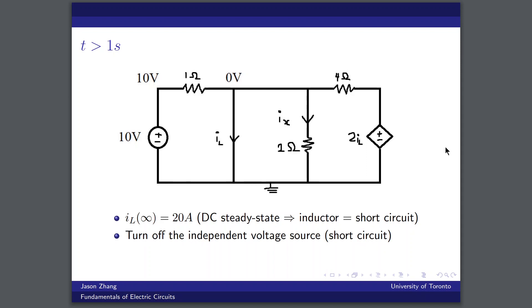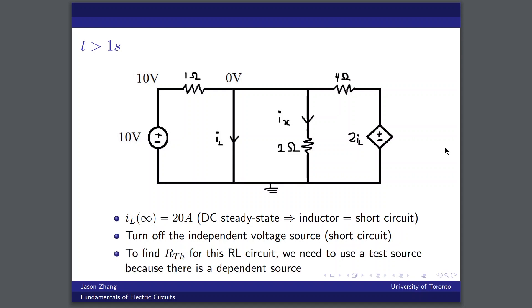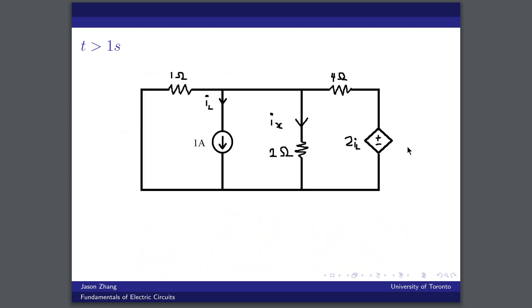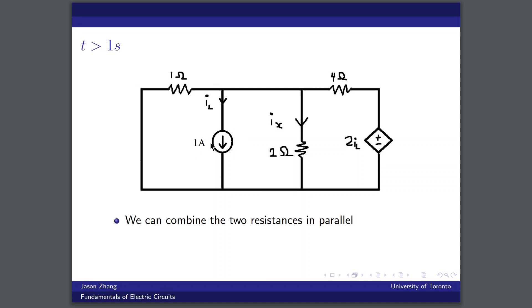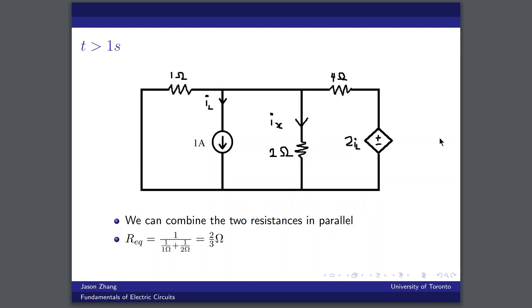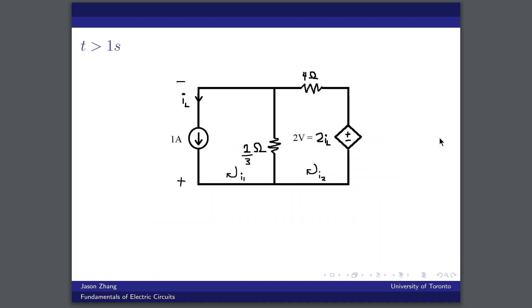We should also turn off our independent voltage source, we should short circuit it in order to find our Thevenin resistance for the RL circuit. Again, we need to use a test source because there is a dependent source. So we can get rid of our independent source, and we can replace our inductor with a test current of one amp. And we should notice that we can combine our 1 ohm and 2 ohm resistors because they're in parallel. Their equivalent resistance is just 2 over 3 ohms. And simplifying, we can draw our circuit like this.